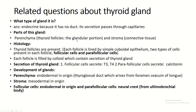Parenchyma is the main portion of the thyroid gland and it is formed by the thyroid follicle. The wall of the thyroid follicle is formed by follicular cells and occasional parafollicular cells situated beside the follicular cell but within the basement membrane. Each follicle is filled with colloid, which contains the secretion of the thyroid gland. Follicular cells secrete T3 and T4, and parafollicular cells secrete calcitonin. Regarding development: parenchyma is endodermal in origin, arising from the thyroglossal duct which originates from the foramen cecum of the tongue. Stroma is mesodermal in origin. Follicular cells are endodermal in origin and parafollicular cells are derived from neural crest cells via the ultimobranchial body.